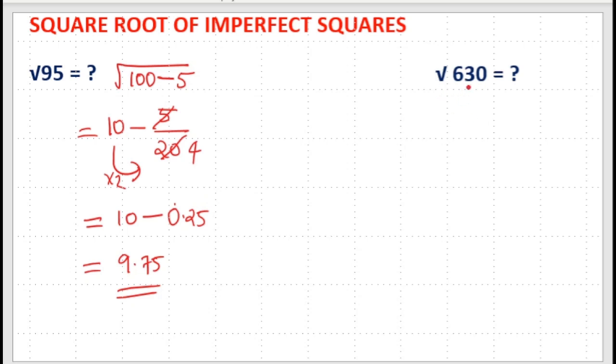Here root 630 is nearest to 625. 625 plus 5 is equal to 630.